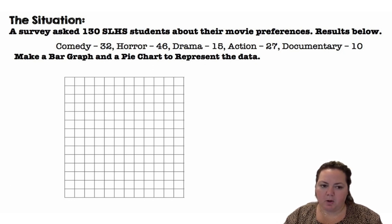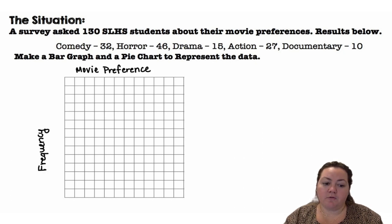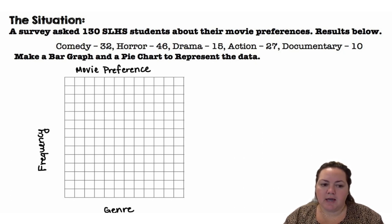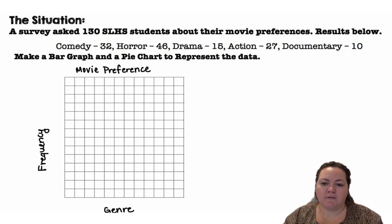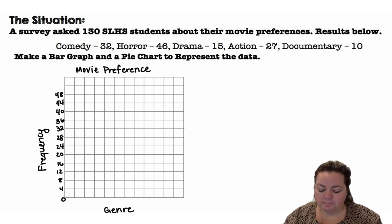So we're going to set up our bar graph. We're going to put a title: movie preference. On the side we're going to do frequencies, which are counts. On the bottom we're going to put the genres, and then we need to decide what we are going to count by. Our largest number is 46, so I went ahead and counted by four so that I could fit enough on there.